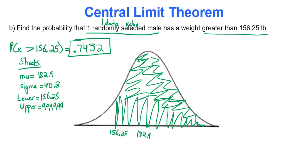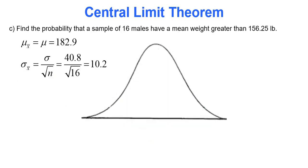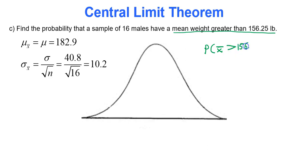But I'm interested in the whole group as a whole. I'm interested in knowing about those 16 people in the elevator — find the probability that a sample of 16 males has a mean weight greater than 156.25. I want to know about their average, because if their average weight is more than that, we have a problem. That elevator might not be able to handle the load.